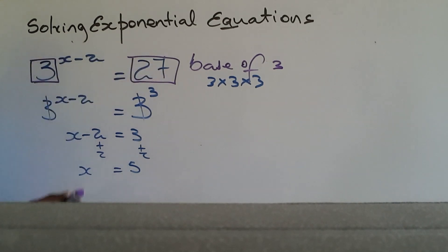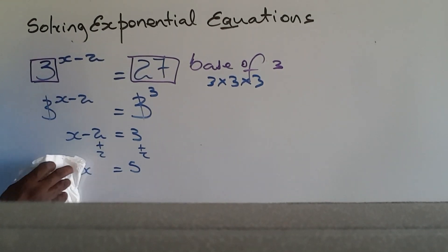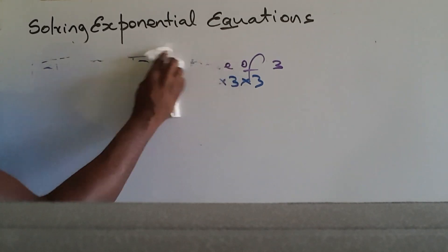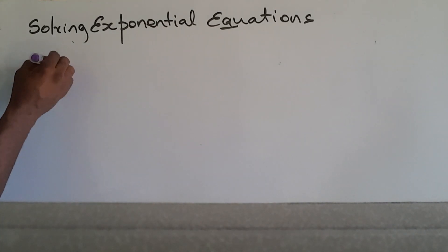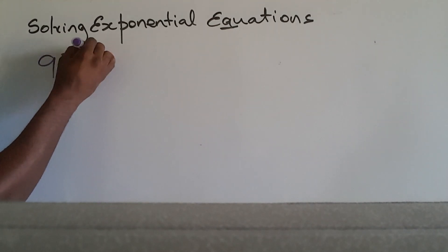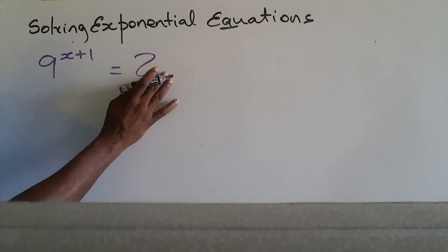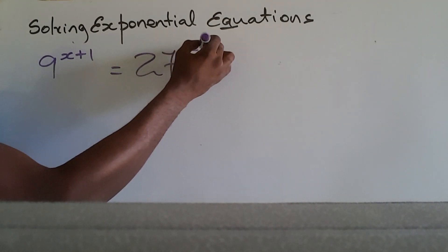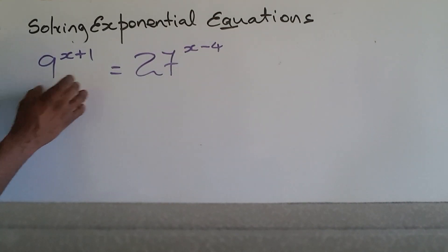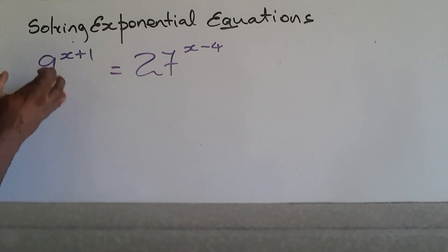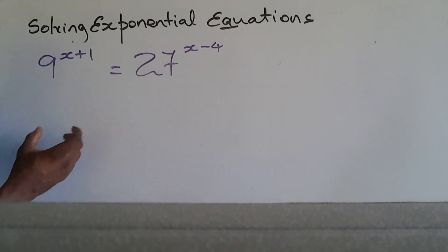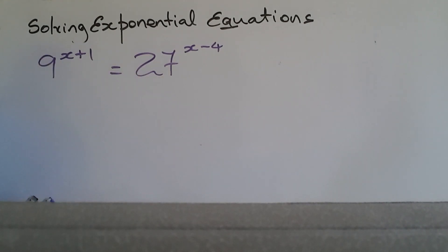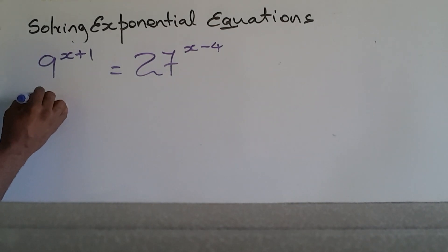Let's sneak in one more problem that looks a bit more difficult. What if we see 9 raised to the X plus 1 equals 27 raised to the X minus 4? I can't raise 9 to get 27, and I can't raise 27 to get 9, but I realize there's a common link — both 9 and 27 are linked to the base of 3.